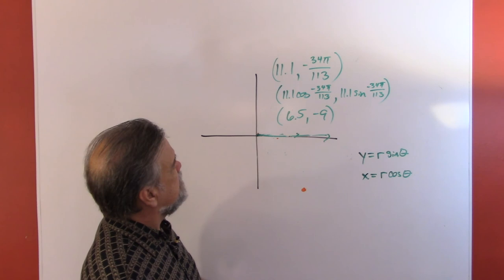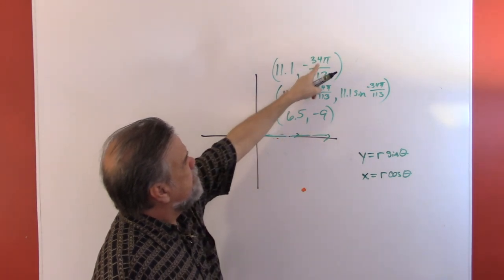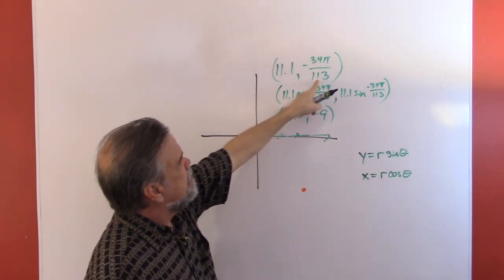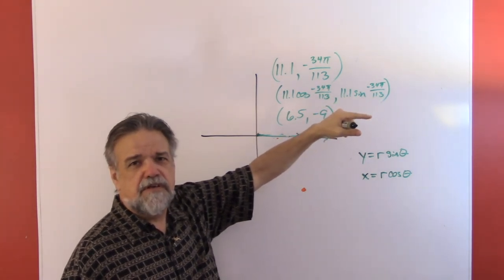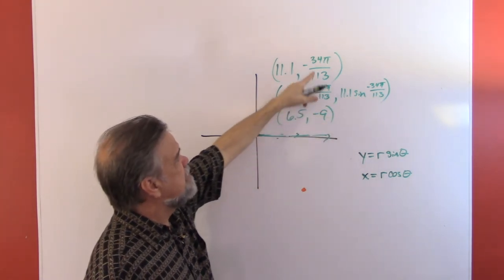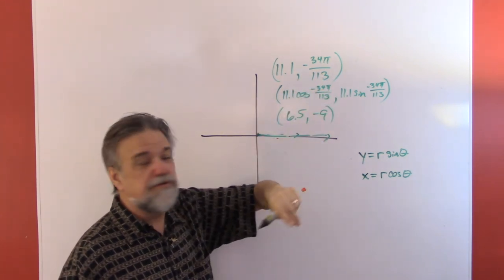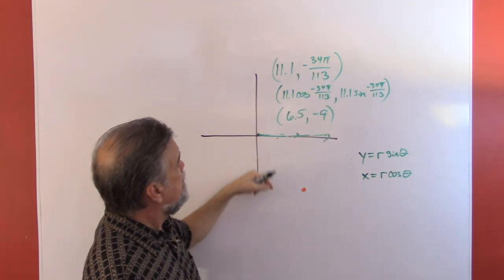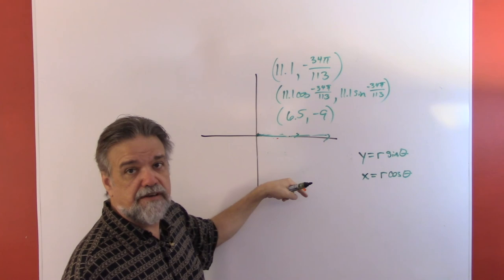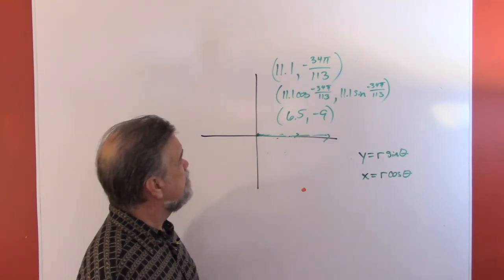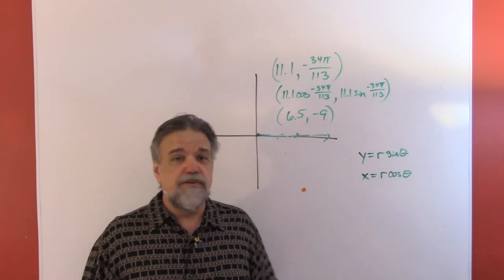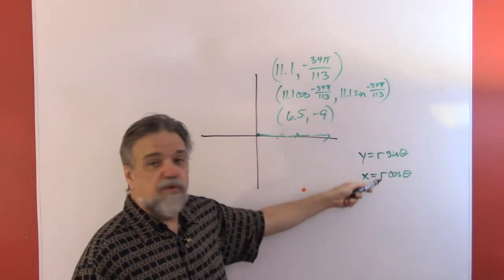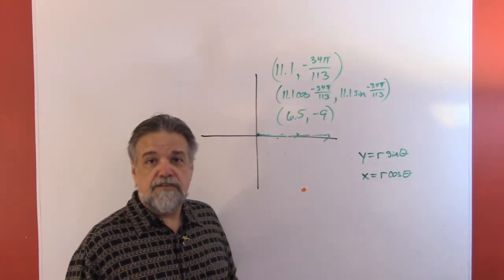Let's see, does that make sense? Yeah, 34 over 113 is a rather small fraction, it's about a third or so. This is negative, it's close to negative π over 3, and so that's going to be—yeah, it's going to be headed down here in the fourth quadrant. So that makes sense.